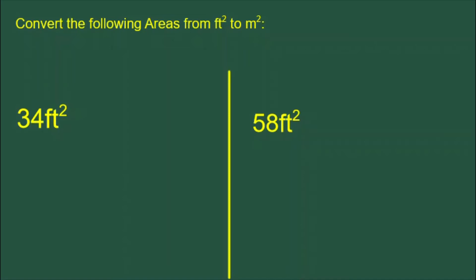Today's Daily Dose of Math is about converting areas from feet squared to meters squared. We have two areas in feet squared, 34 and 58, and we're going to convert them to meters squared.